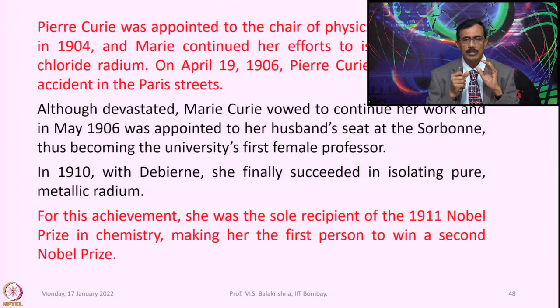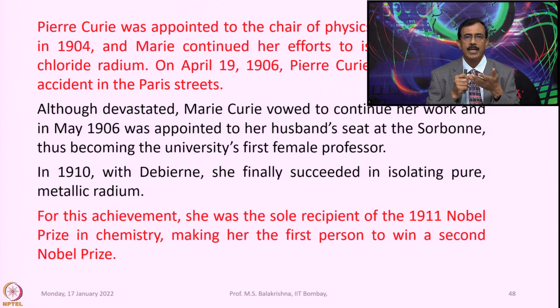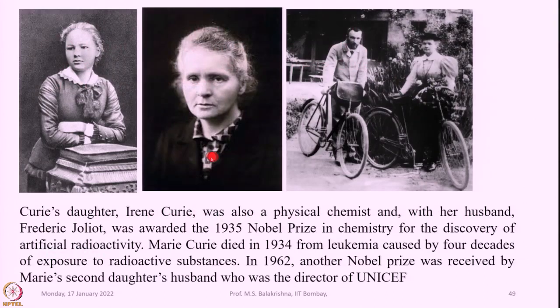For this achievement she was the sole recipient of the 1911 Nobel Prize in Chemistry, making her the first person to win a second Nobel Prize. Curie's daughter Irene Curie was also a physical chemist, and with her husband Frédéric Joliot was awarded the Nobel Prize in Chemistry in 1935 for the discovery of artificial radioactivity.